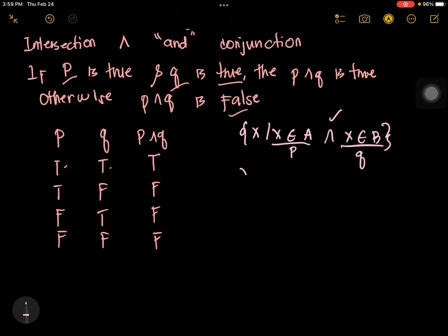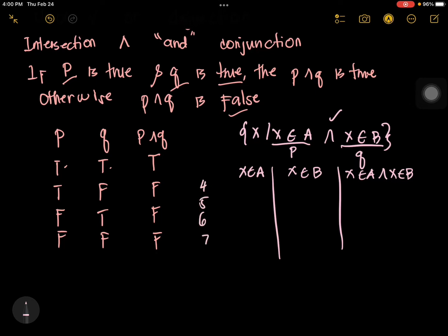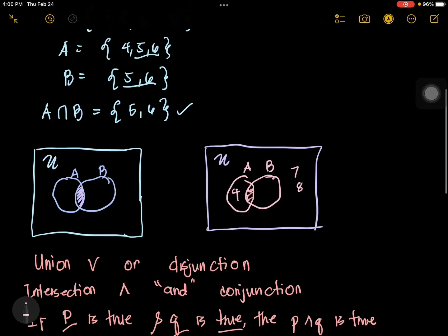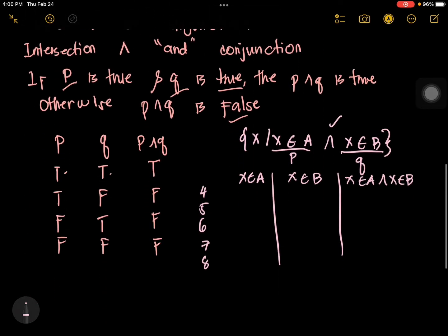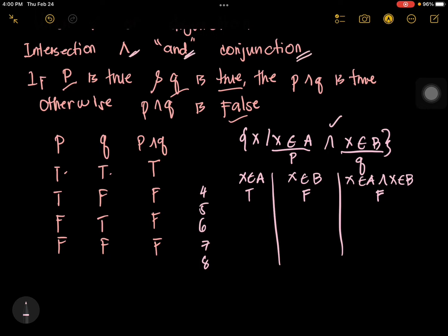Let's check each element. For 4: 4 is an element of A, so P is true, but it's not an element of B, so Q is false. Both must be true in a conjunction, so this is FALSE — unlike union where one being true is enough. In conjunction, it will only be true if all propositions are true.